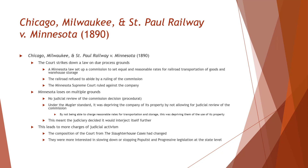By substituting its judgment for that of state legislators in determining the fairness of regulations of property and liberty under the due process clause of the 14th Amendment, the court was acting contrary to the public opinion that spurred state regulations. Political pressures upon state legislatures throughout the country had resulted in laws regulating business — laws the courts were unwilling to sustain. Farm groups, progressive groups, populists — their views were carrying the day with the public. They were electing a lot of legislators in states.